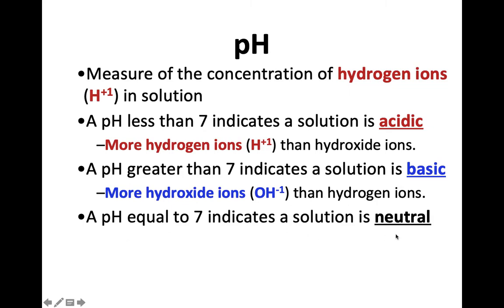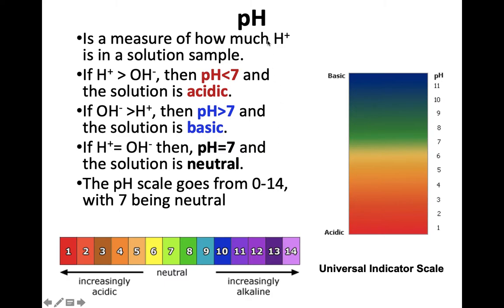And of course if the pH is 7, it is neutral, where the acid and the base cancel each other out. Notice OH and H - that's going to be important. So to measure pH: if H is greater than OH, the pH is less than 7, which means it's an acid. If there are more OHs than Hs, the pH is greater than 7, which is a base. If Hs equal OHs, that is neutral, which is 7. The scale goes from 0 to 14, and 7 is neutral. Acids are red, bases are blue - that relates to the litmus test and litmus paper.